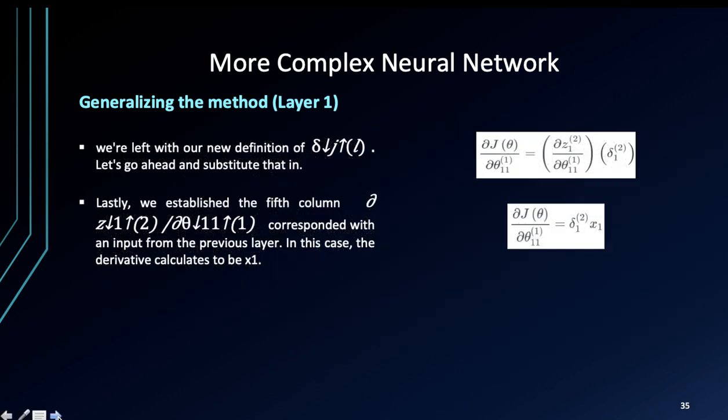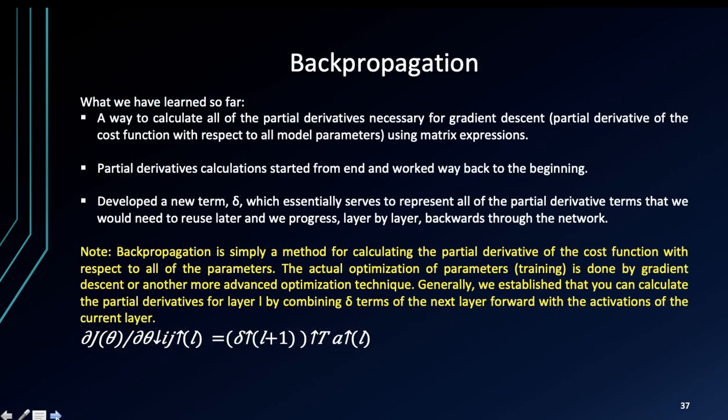With PyTorch we do get the option of playing around with the L1 and L2 parameters. What we have learned so far is a way to calculate all of the partial derivatives necessary for gradient descent, which is the partial derivative of the cost function using matrix expressions. Partial derivative calculations start from the end and work their way back to the beginning, and then we develop this new term which serves to represent all the partial derivatives that we would need to reuse later.